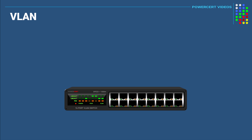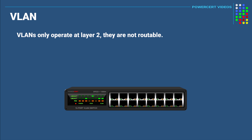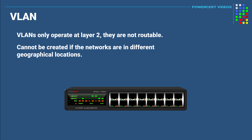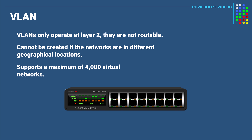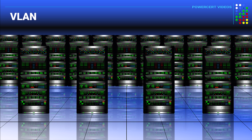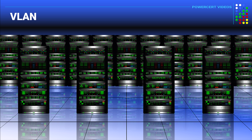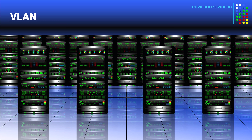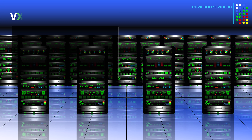Now VLANs do have some limitations. One is that they only operate at layer 2, so they are not routable — meaning VLANs cannot be created if the networks are in different geographical locations. Another limitation is that they only support a maximum of 4,000 virtual networks. Normally this wouldn't be a problem, since 4,000 virtual networks is plenty for most organizations. But for large enterprise organizations with data centers that use cloud computing and virtual machines, 4,000 is not enough. This is where a VXLAN comes in.